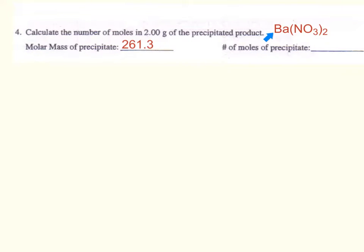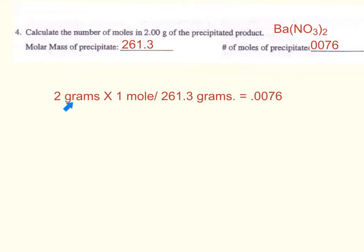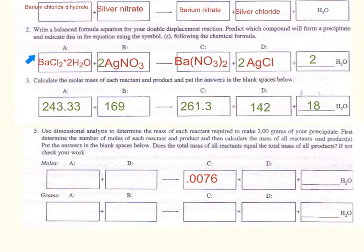We're looking at the precipitate barium nitrate, which has a molecular weight of 261.3. I need to calculate the number of moles of barium nitrate to be formed. To do this, we want to make 2 grams of barium nitrate, so we multiply 2 grams times 1 mole divided by the molecular weight of barium nitrate. Grams cancel out and we get 0.0076 moles of our precipitate. Now we have our balanced equation and weights from the periodic table, and we're going to cancel units to determine the mass of each reactant required to make 2 grams of precipitate.